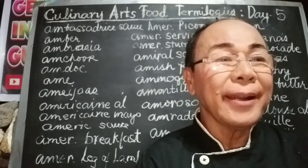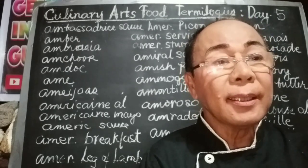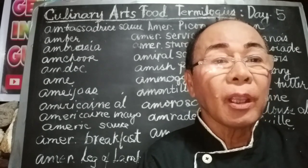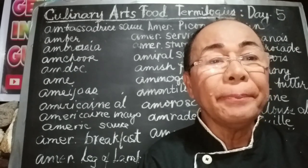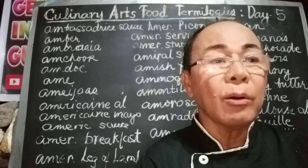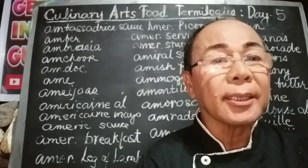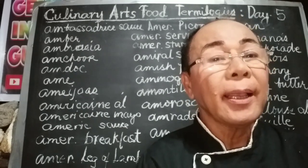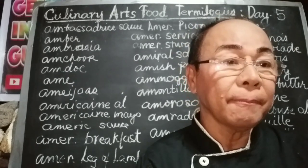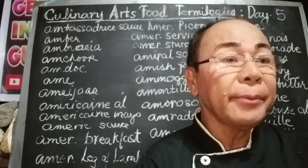The next term is Amchur — a type of powder made from dried raw mangoes. It has a tangy flavor and is used as a spice, principally in Indian cuisine.